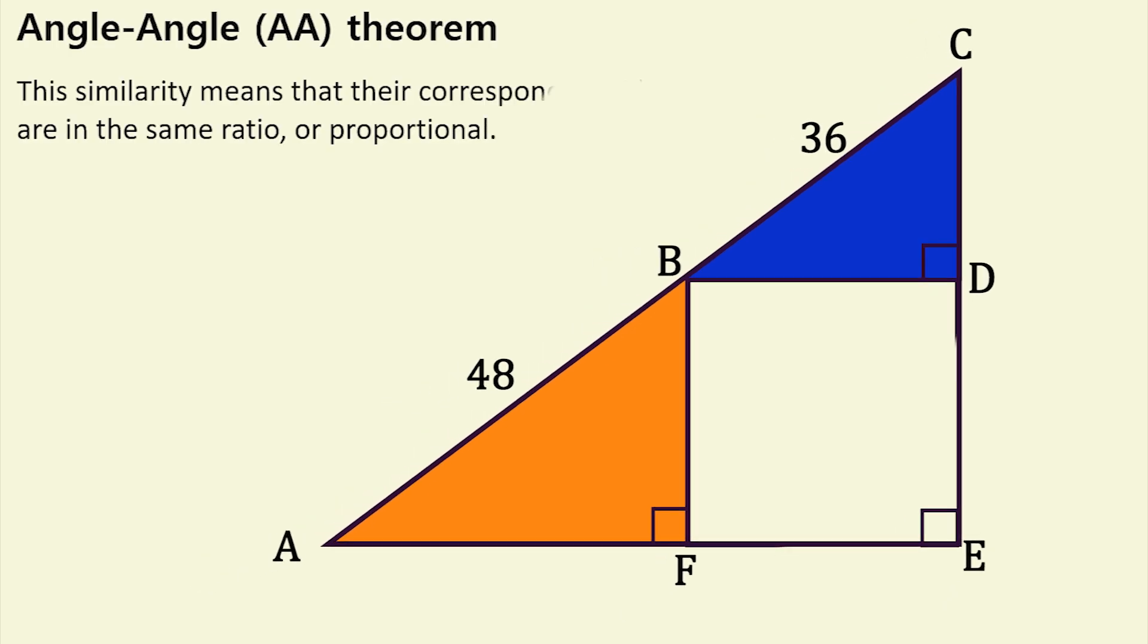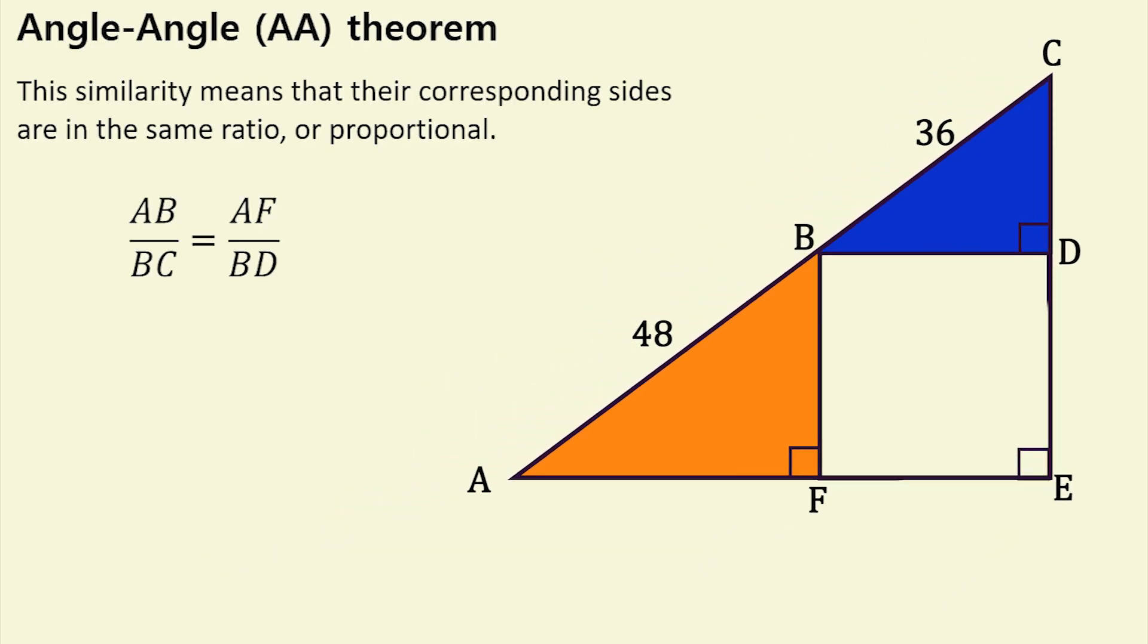In this case, AB divided by BC is equal to AF divided by BD. We know that AB is 48 and BC is 36, so we can find the ratio, 48 divided by 36. If we divide both by 12, we get 4 thirds.